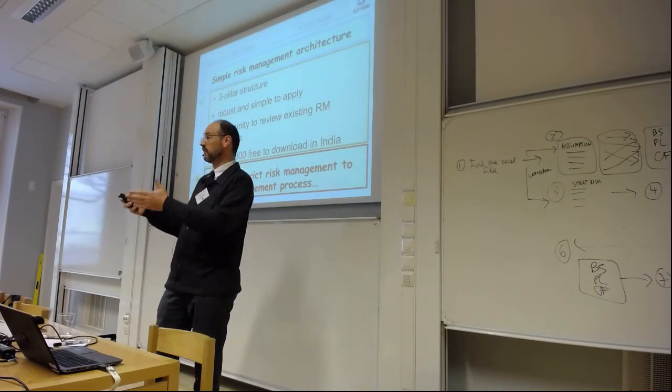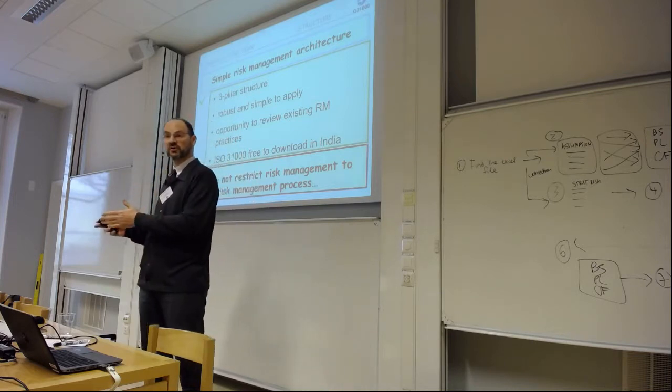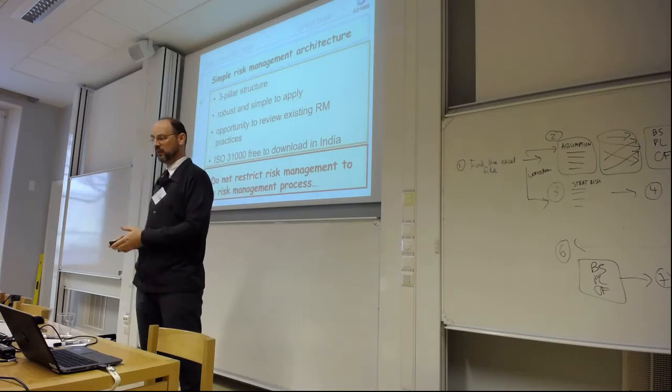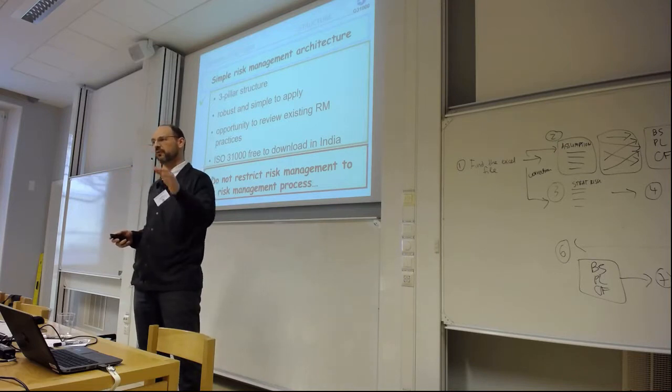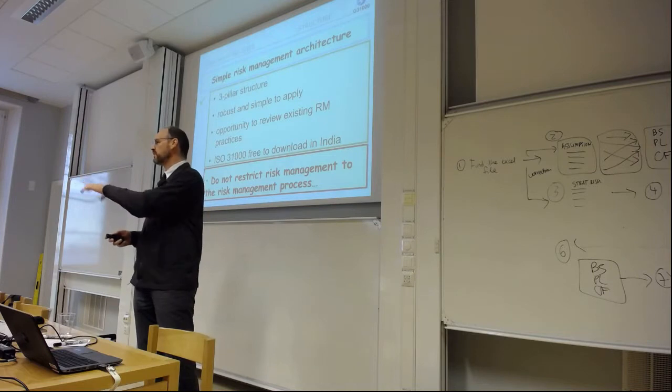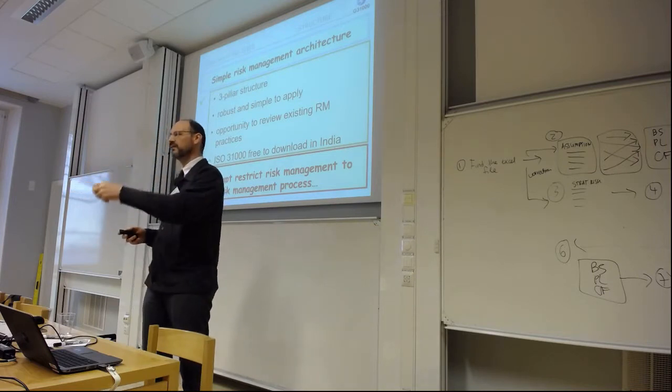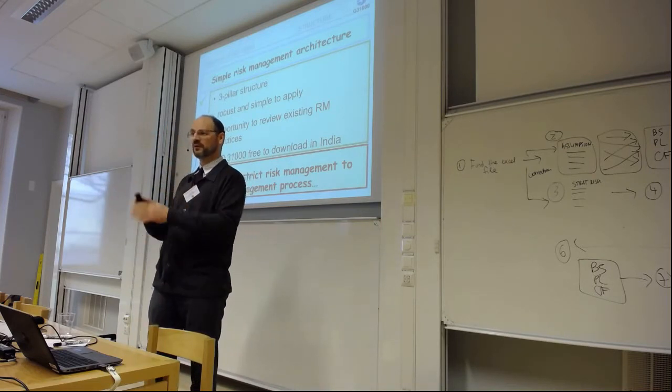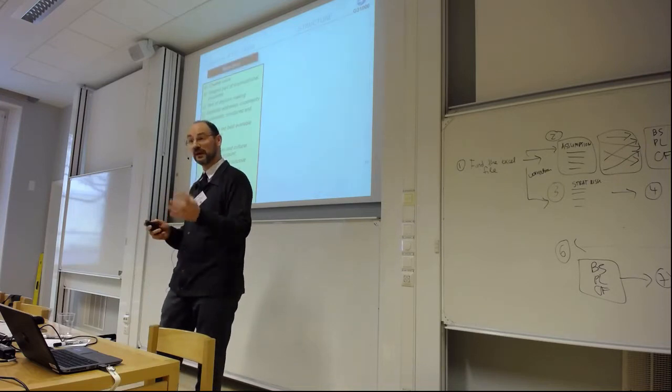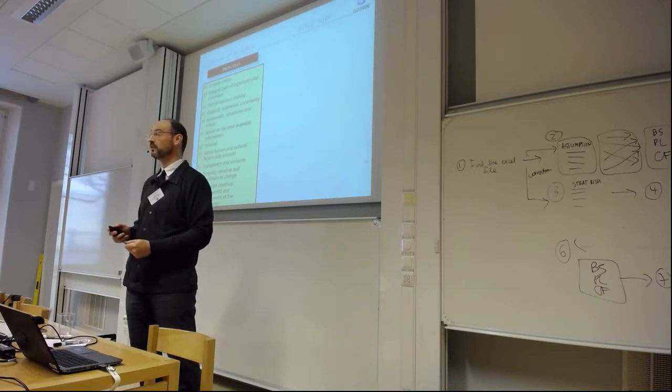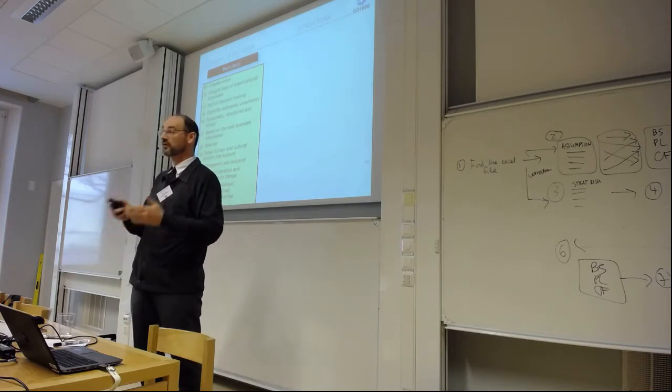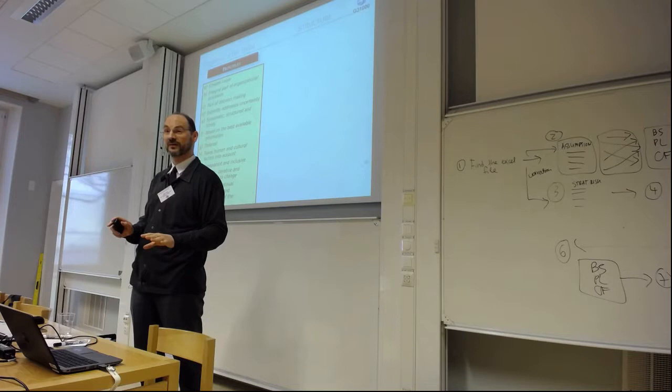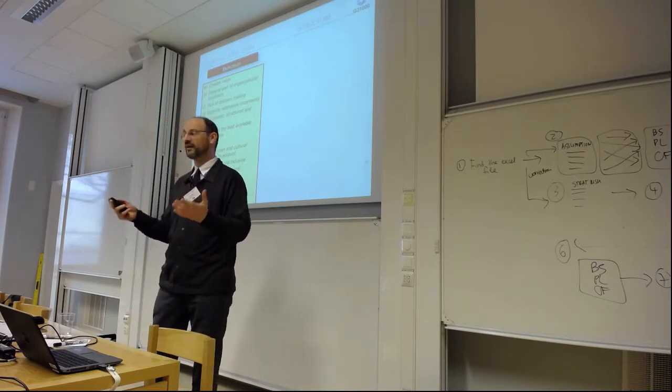ISO 31000 proposes a three-pillar structure: principles, framework, and process. This is one of the many things we hear very often - people restrict risk management to a simple risk management process: identify, analyze, evaluate, treat. That's not risk management. If we want to make the link with decision-making, clearly the principles are very important. Risk management must create value.